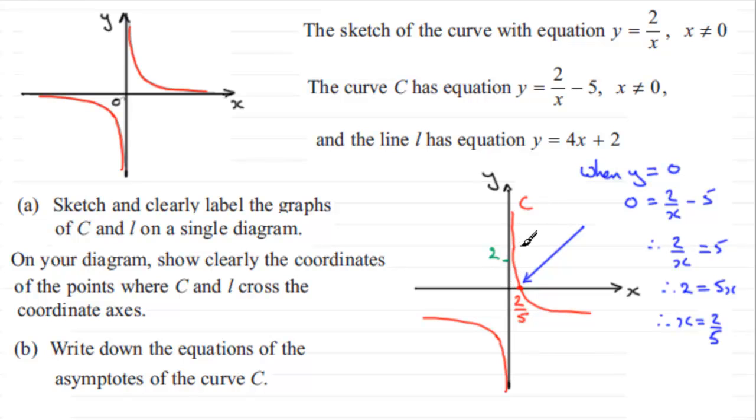And where would this line cross the x-axis? Well, that would be again when y is 0. When y is 0, we'd have 4x plus 2 would equal 0. 4x would then equal minus 2, and x would equal minus 2 quarters, or minus a half. So we'll pop that in, say there, as being the point minus a half. So we've got a line then looking something like this. And this is the line L.